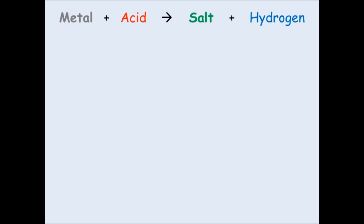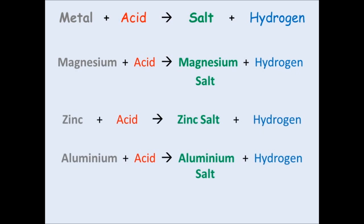So what does that mean with real chemicals? Well, here's three examples. We're reacting three different types of metal with just an acid.